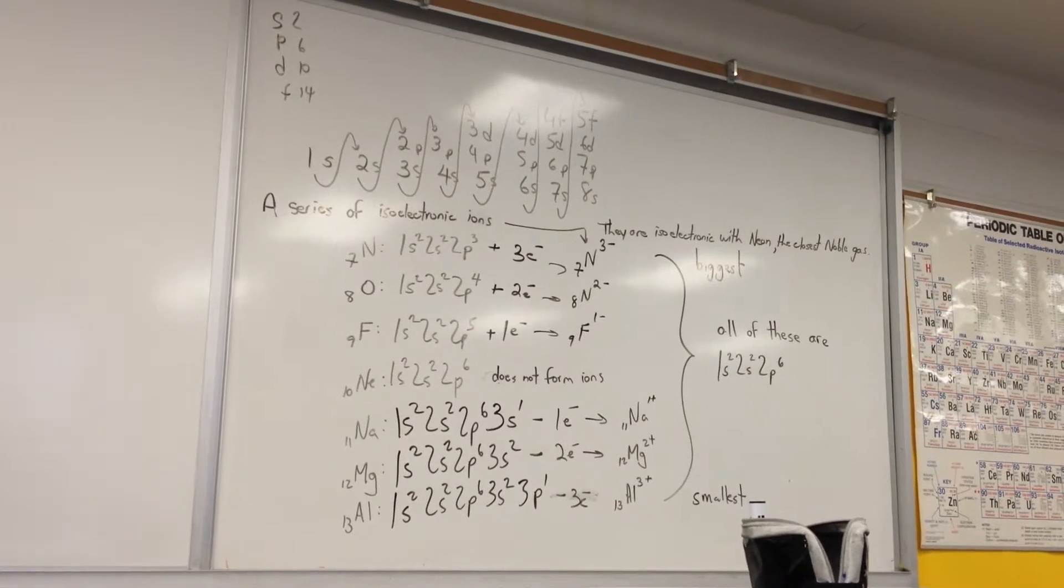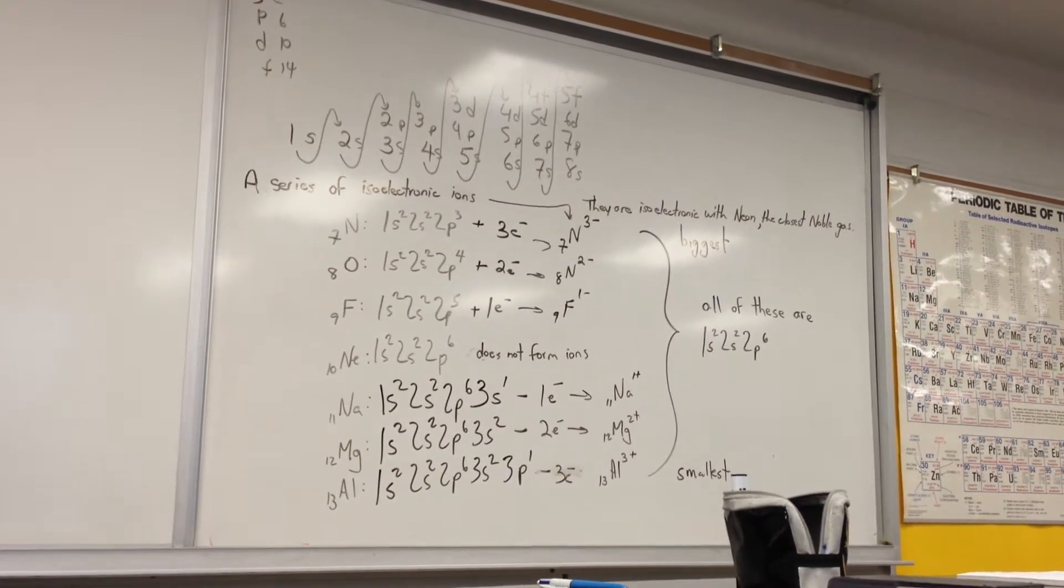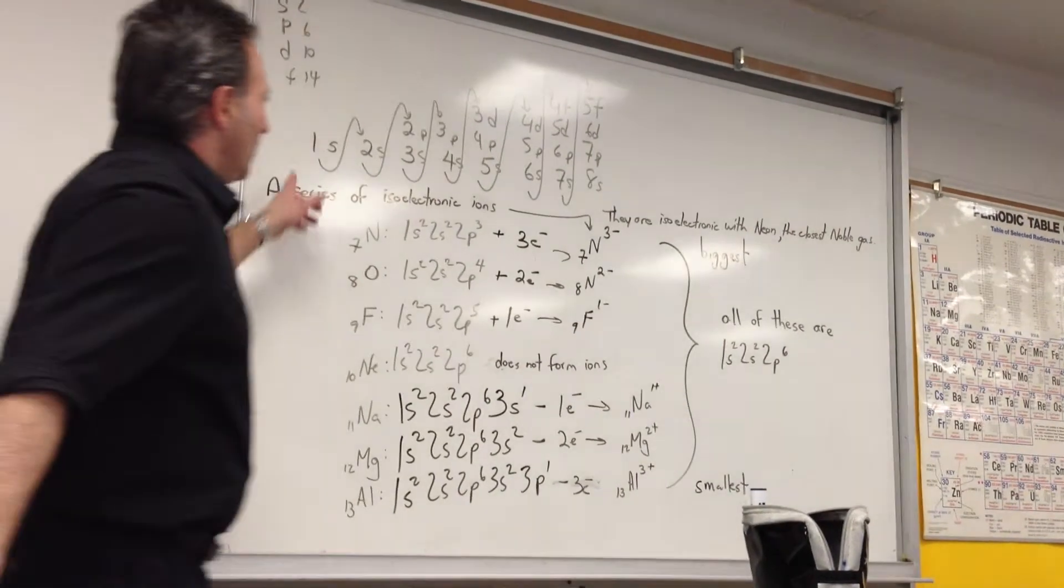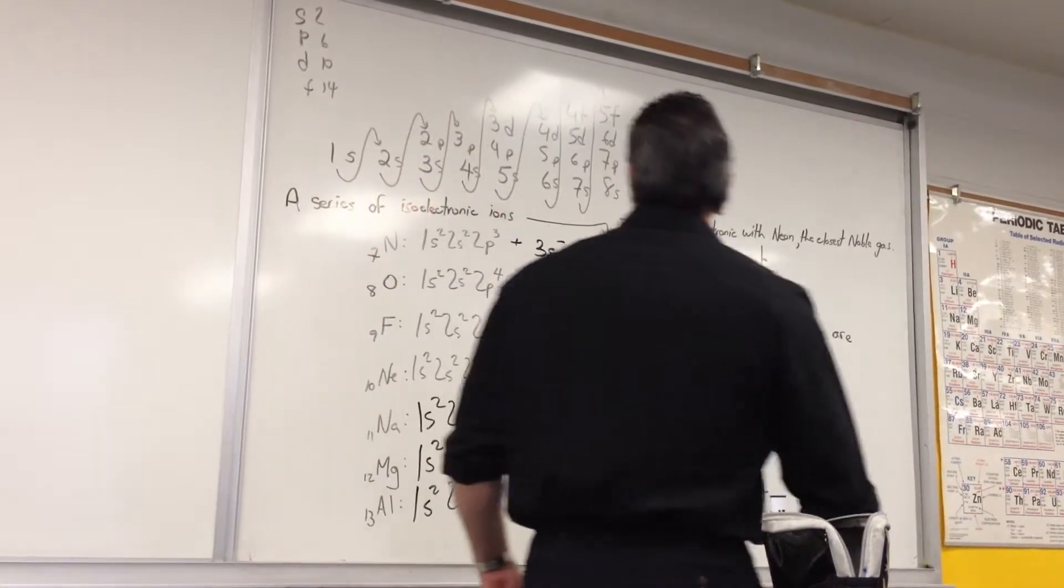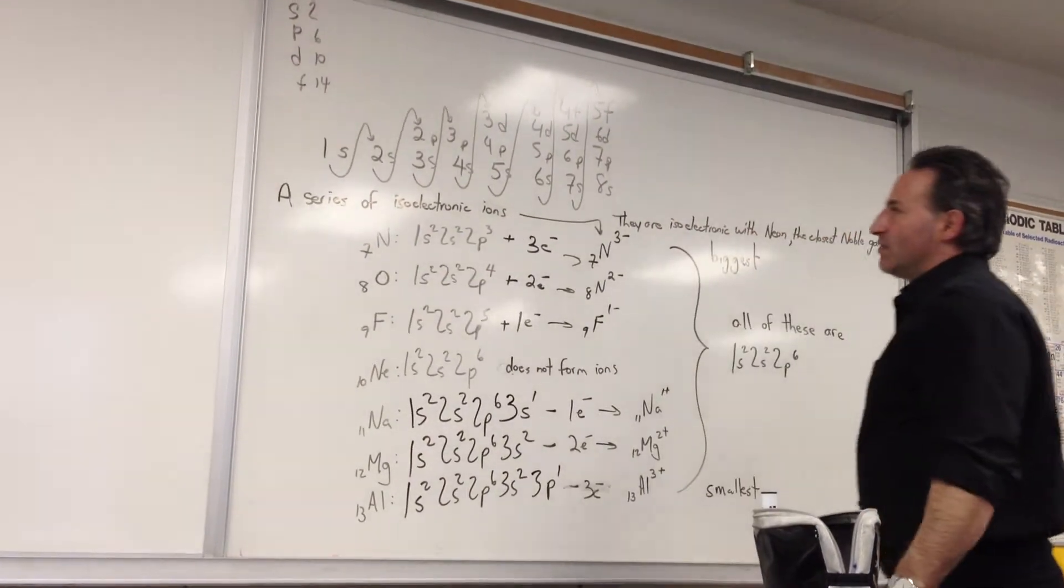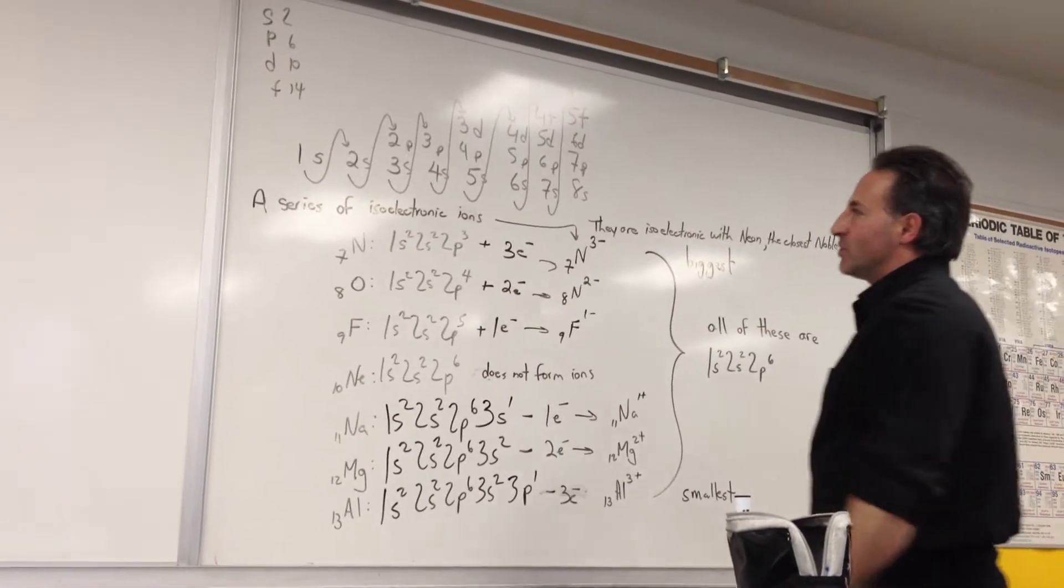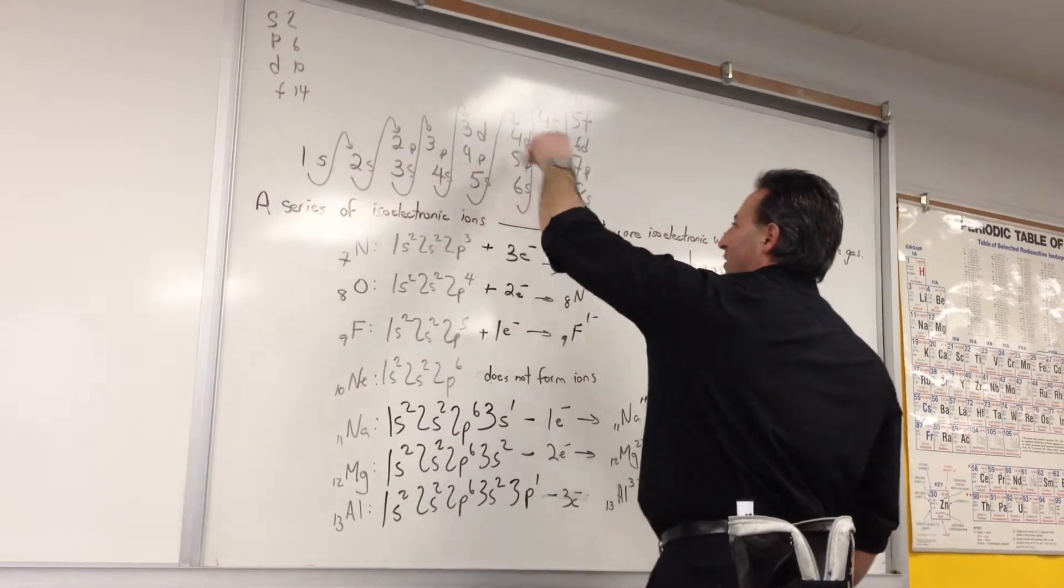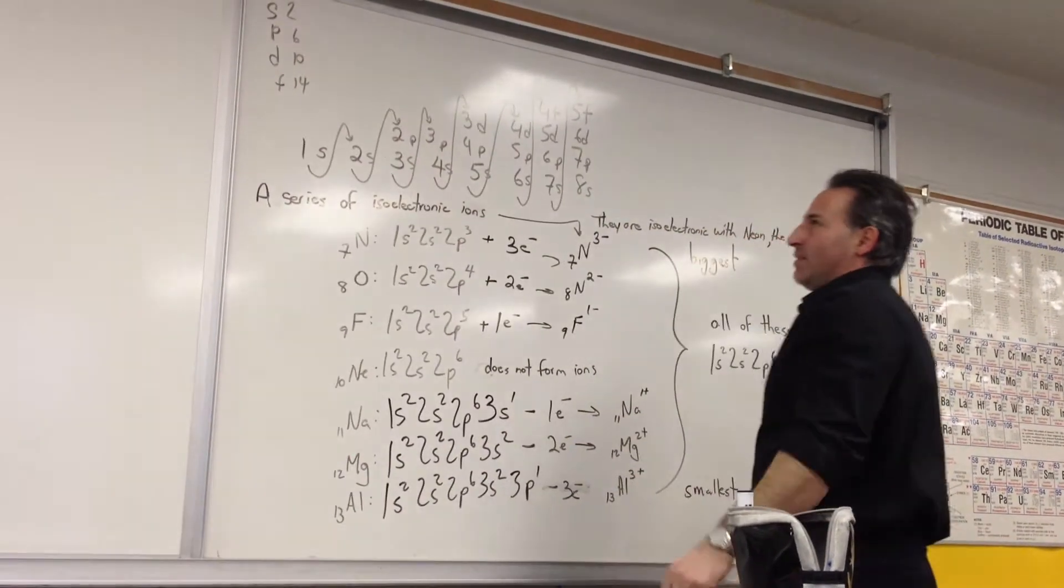We have a series of isoelectronic ions listed. But first let's explain how we did that. I wrote up here a shell filling mnemonic, which is the order of the filling of the electronic shells and sub-shells. You see that it starts with the lowest principal quantum number one and goes up higher and higher. So that's how the electrons pile into an atom.